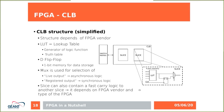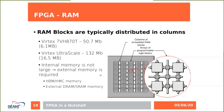The FPGA also contains RAM blocks, which are typically distributed in columns. Looking at the documentation, the memory on the FPGA is not very large — for the Virtex-7 FPGA we can use approximately 6 megabytes of memory, and for the Virtex UltraScale FPGA approximately 16 megabytes. So internal memory is not large, and external memory is really needed.